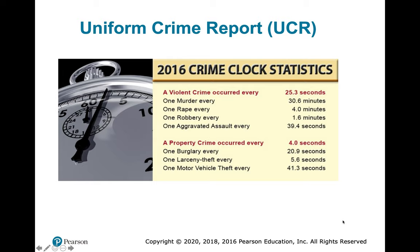Looking at 2016 crime clock statistics: a violent crime occurs every 25.3 seconds, a property crime every 4 seconds, one rape every 4 minutes — keep in mind those are just reported rapes — one murder every 30 minutes, and one larceny-theft every 5.6 seconds.